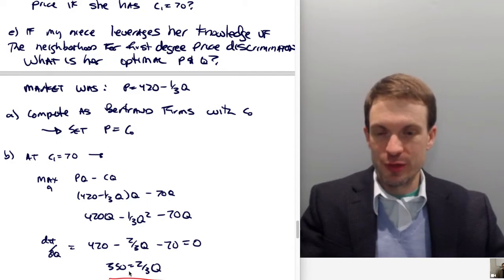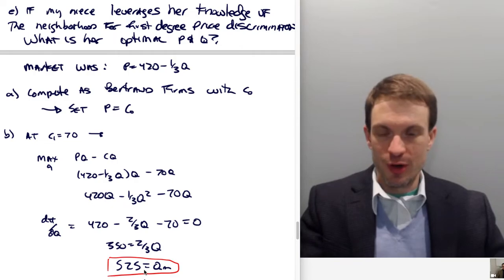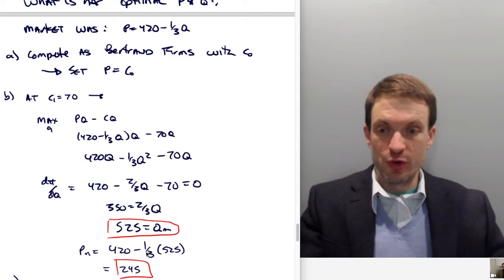Cleaning this up, we get 350 = (2/3)Q, or Q = 525 is our monopoly quantity. What's our monopoly price? The monopoly price would be 420 - (1/3)(525), which is 245.